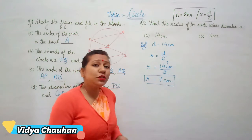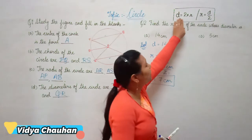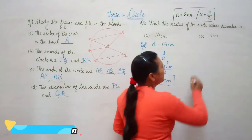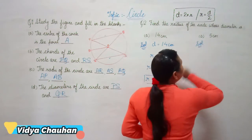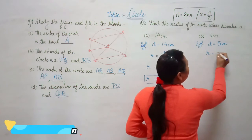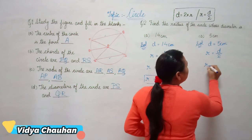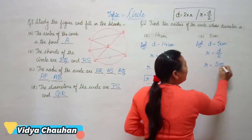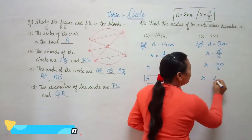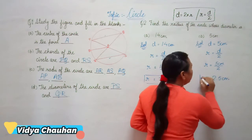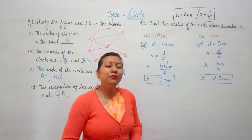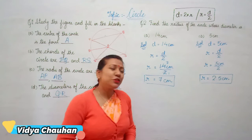Similarly, you can find diameter if radius is given — use diameter equals 2 times radius. In the second part, diameter is given as 5 centimeters. Radius equals diameter divided by 2, so radius equals 5 divided by 2, which is 2.5 centimeters. If the diameter is 5 cm, the radius is 2.5 cm.